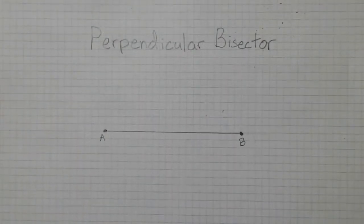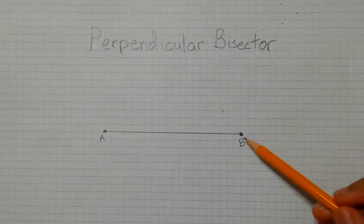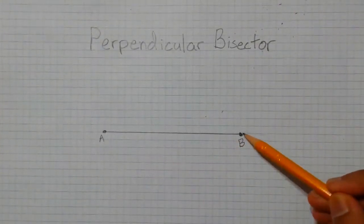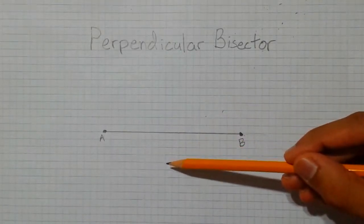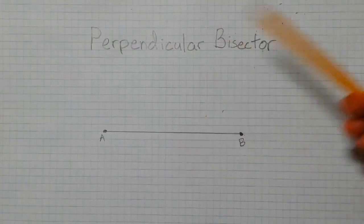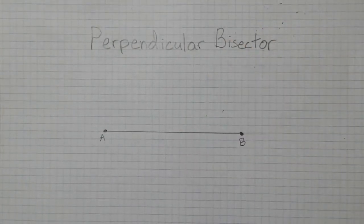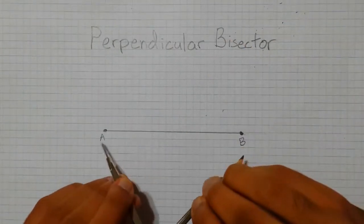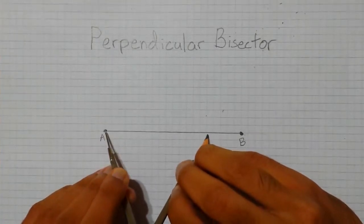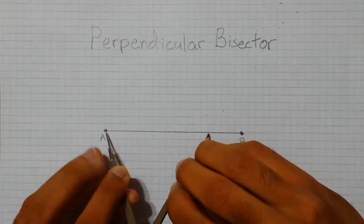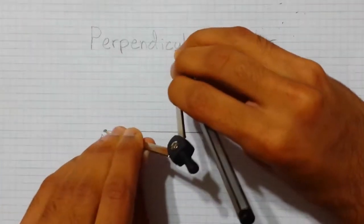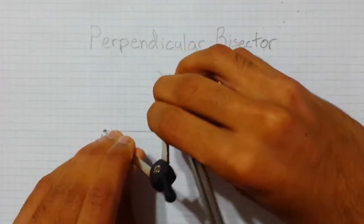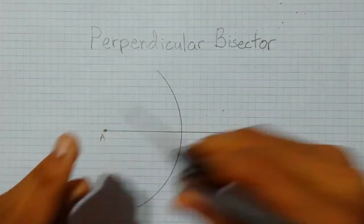The next construction is the perpendicular bisector. The perpendicular bisector of a line segment such as AB is essentially a line through the center of the line segment that forms a 90 degree angle. To construct this, we will first take our compass, place one point on point A, and place the other one just over half of the line segment, then draw an arc through the line.